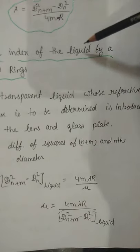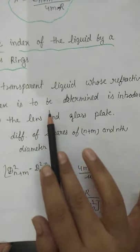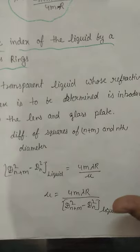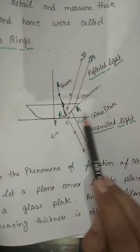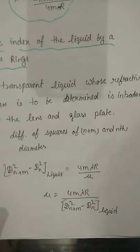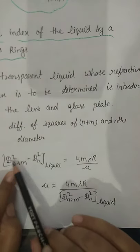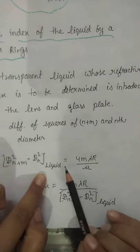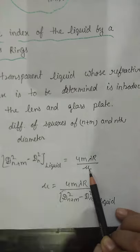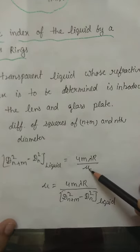The second application is determination of refractive index of a liquid using Newton's rings. The transparent liquid whose refractive index is to be determined is introduced between the lens and the glass plate. If we insert a liquid between the plano-convex surface and the glass plate, a liquid film is formed, and we need to find the refractive index of that liquid film.